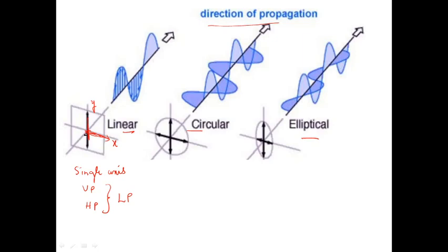We can also call these major axis and minor axis — it is a different type of representation. Here, we have projected the change over only one direction, which is in a linear polarized wave. For the case of horizontal polarization, you can change the waveform so that the projection is along the horizontal axis.